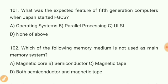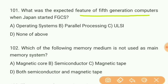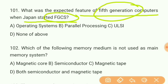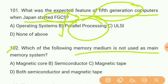Question 101: What was the expected feature of fifth generation computers when Japan started FGCS? The answer is B — parallel processing. Parallel processing is the expected feature of fifth generation computers. Question 102: Which of the following memory medium is not used as main memory system? The answer is C — magnetic tape.